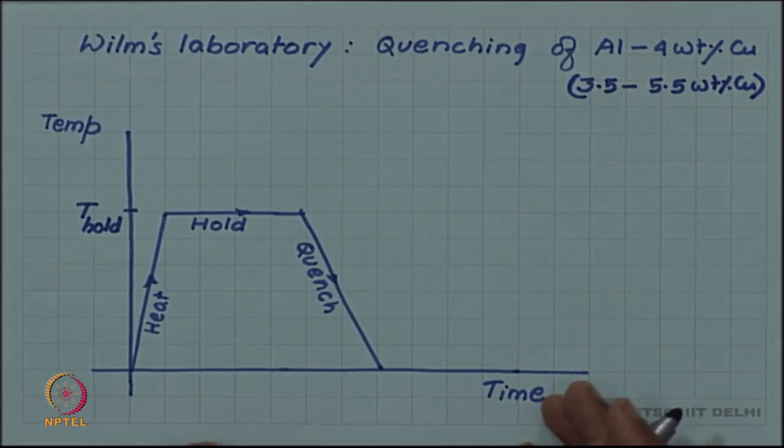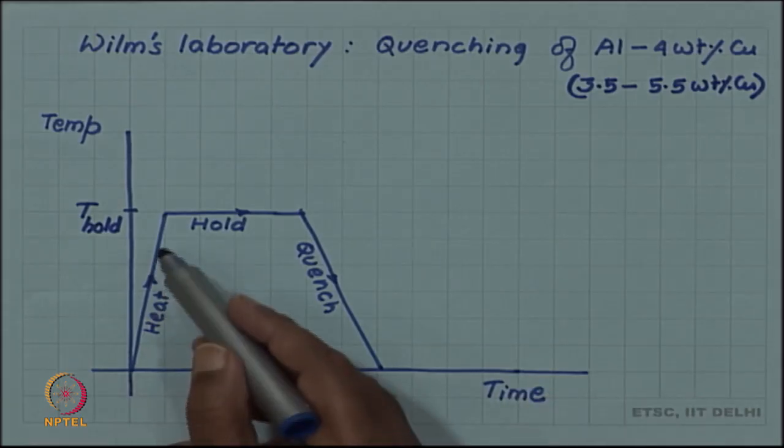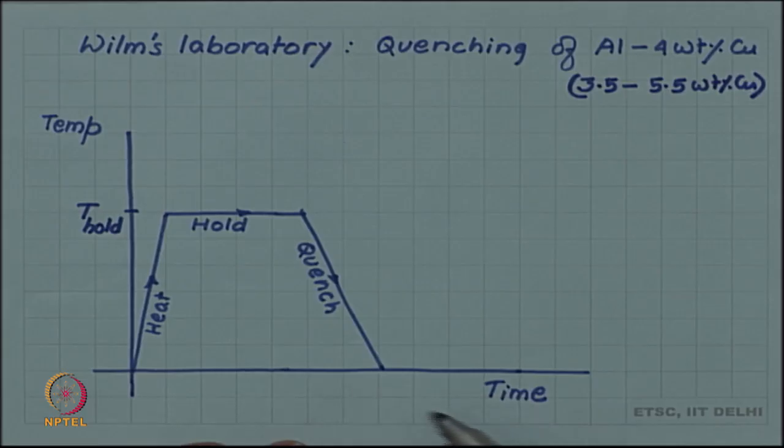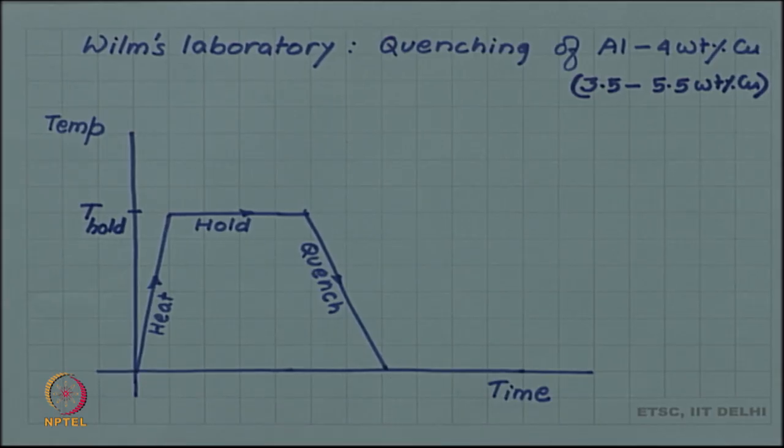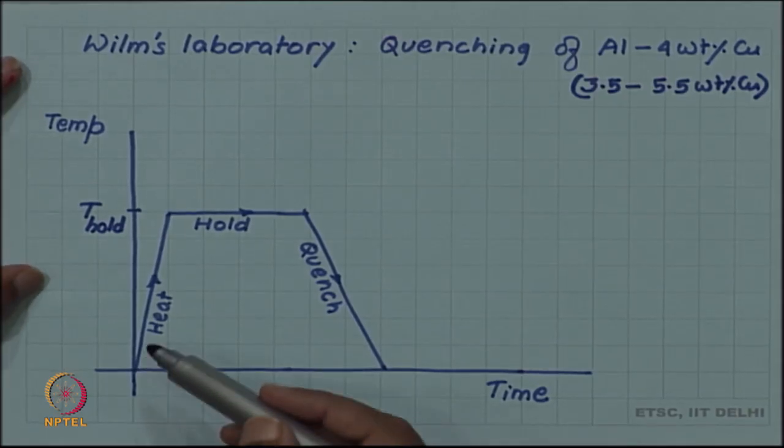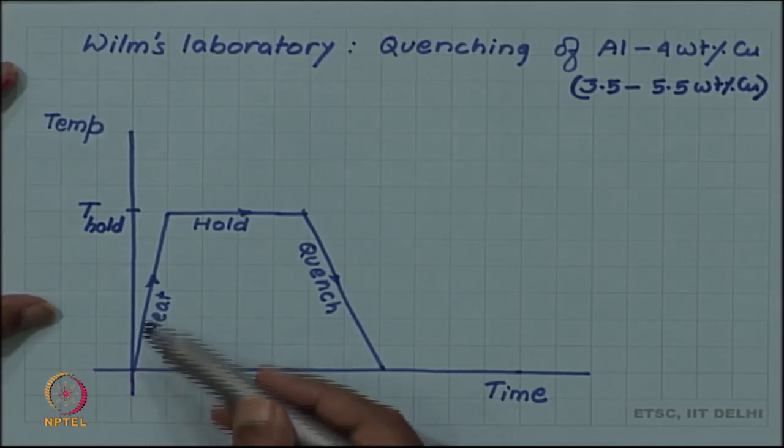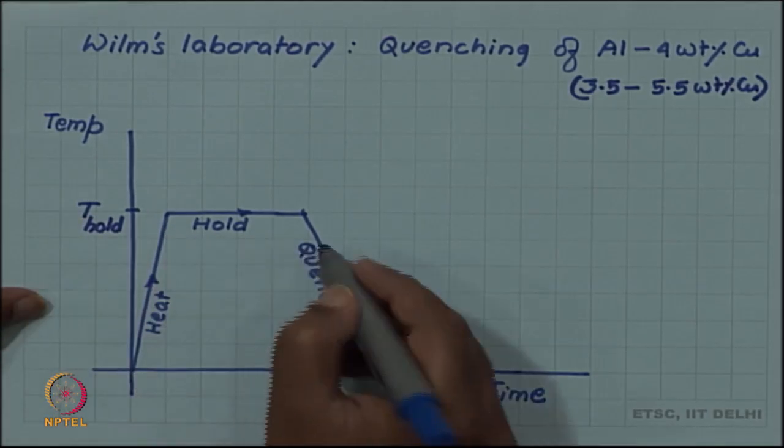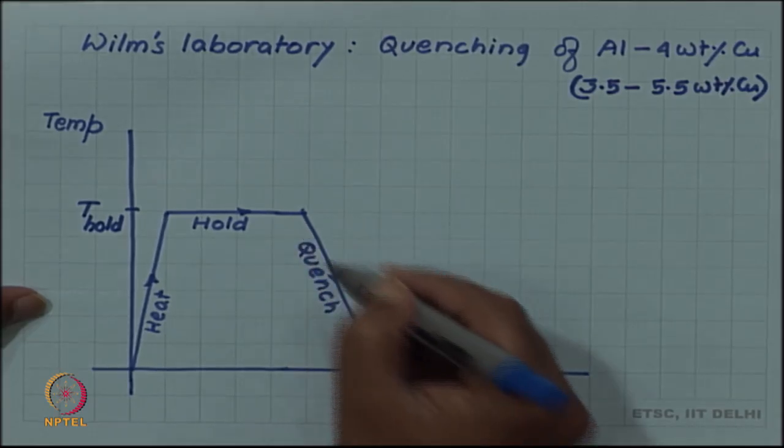However, initially he had no success. He heated the sample, held it for a sufficiently long time and quenched it, hardness did not increase. In fact, in some cases it depressingly decreased; the hardness after quench was even less than the initial hardness he started with. The process was not being successful. But he was a determined scientist, he had several variables in his hand. At what temperature do you hold? And at what rate do you quench?